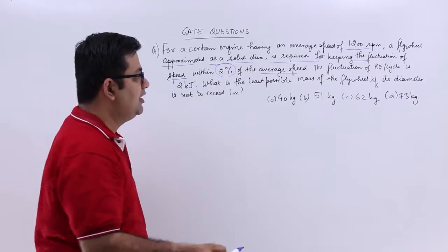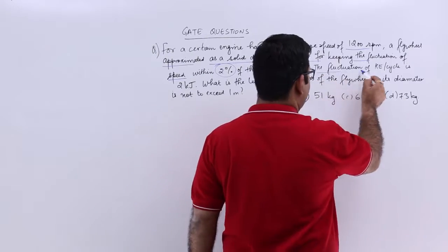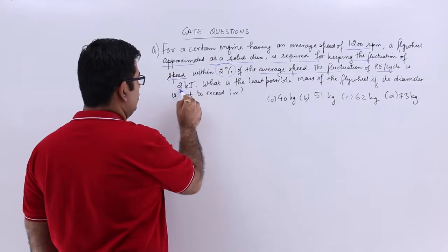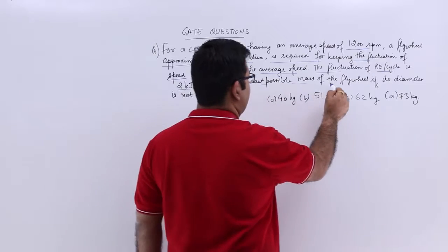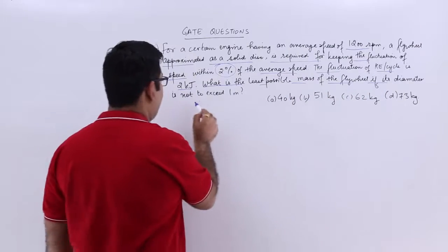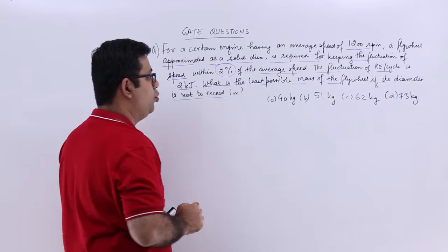The mean speed. The fluctuation of kinetic energy per cycle is 2 kilojoules. What is the least possible mass of the flywheel if its diameter is not to exceed 1 meter?